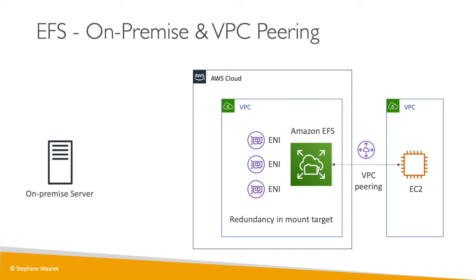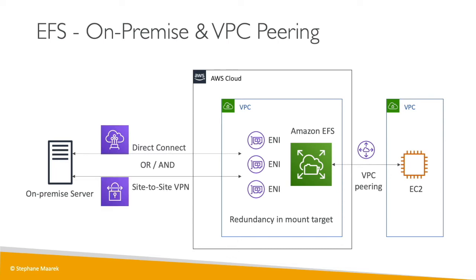It's also possible to access EFS from an on-premise server. For this, you need to set up either Direct Connect or a site-to-site VPN — or both, for redundancy and failover. The on-premise server can access EFS only by using the private IPv4 of the ENI, not by using the DNS name, as that is not supported right now. This means EFS can work across multiple accounts and even on-premise, which is an important point to remember for the exam.